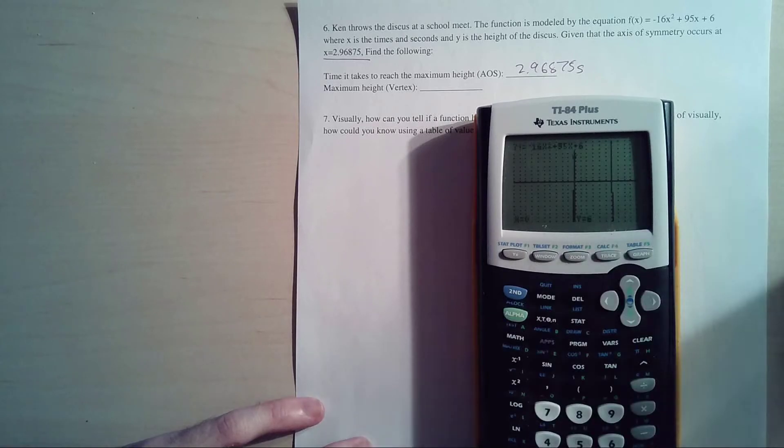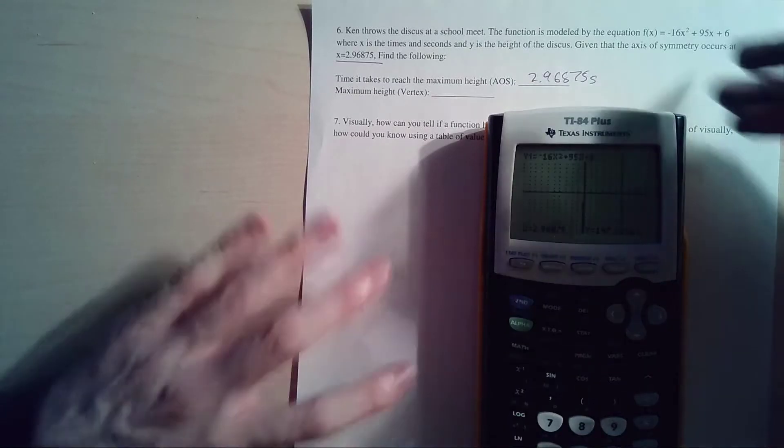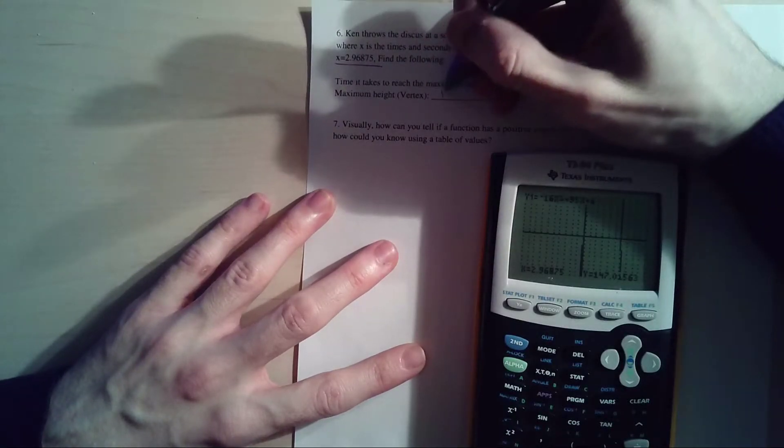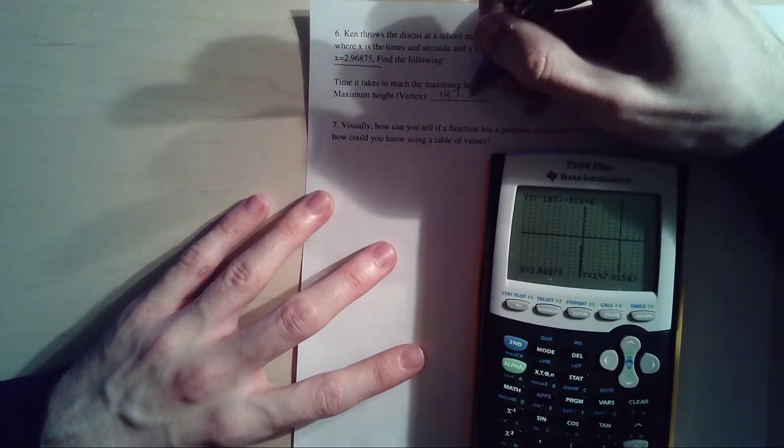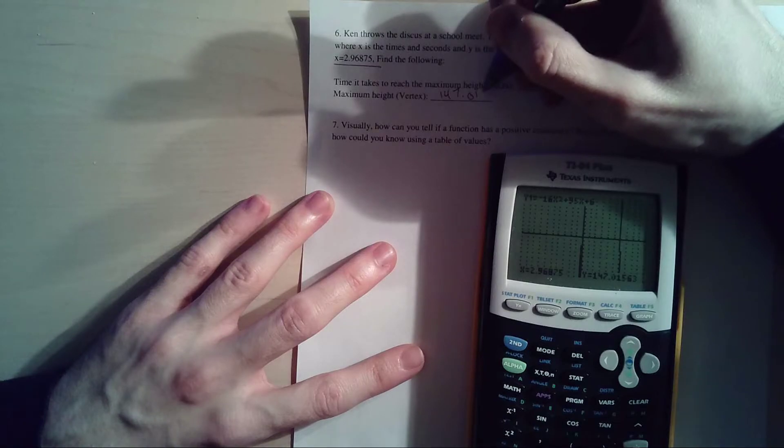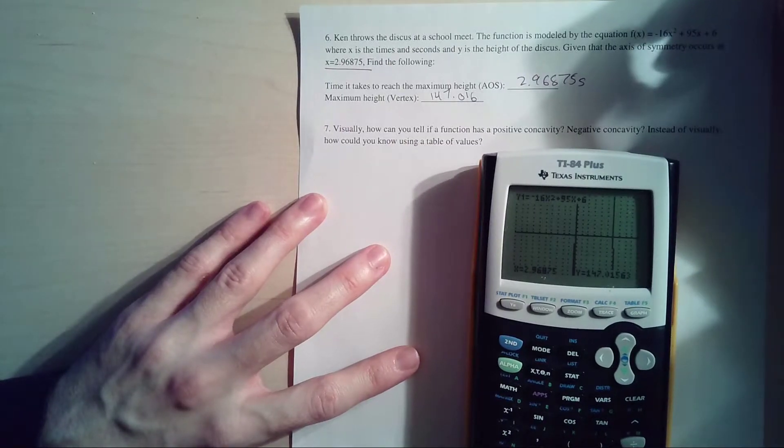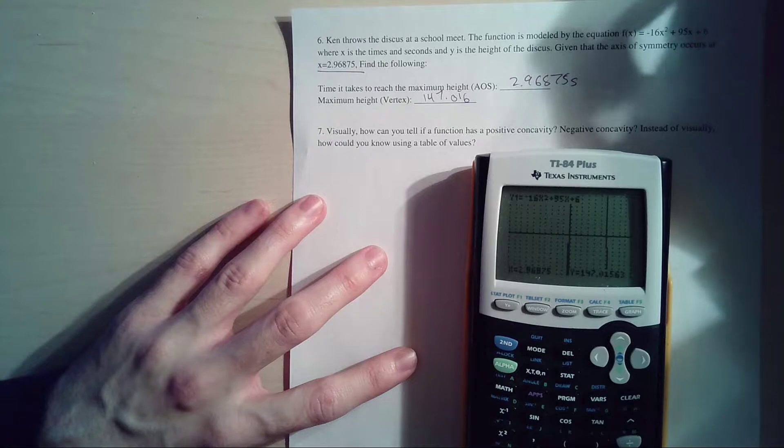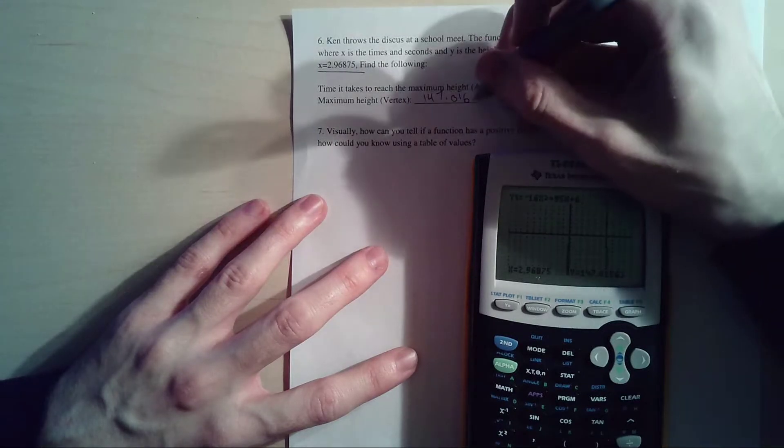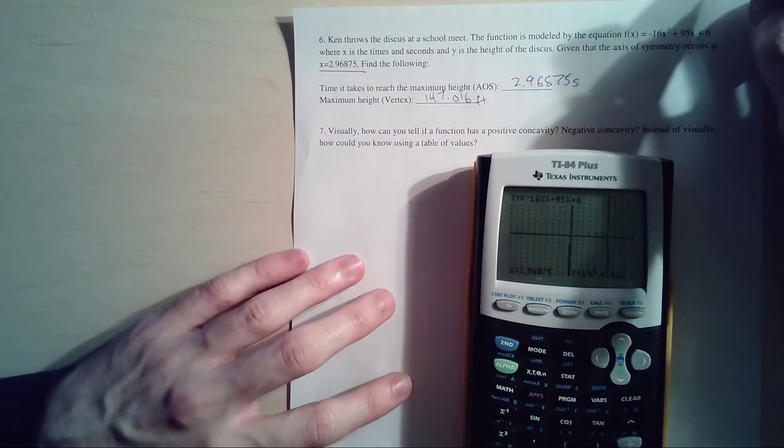We just need to hit the Trace button and we need to plug in that 2.96875. We plugged in the whole thing. After hitting Trace, you hit Enter, and it looks like, easy enough, 147.016. Y is the height. It doesn't even say if it's in feet or not. Negative 16 actually does mean feet, so I'm gonna put it. But yeah, I don't really know what that question was all about, but you know, there it is.